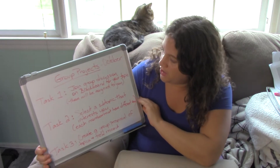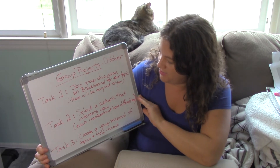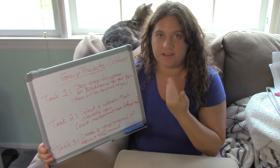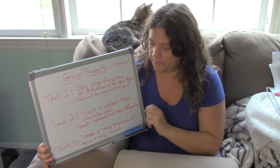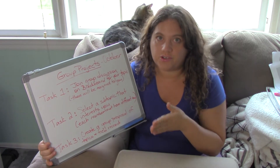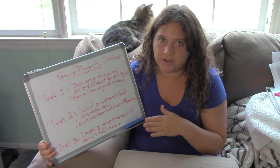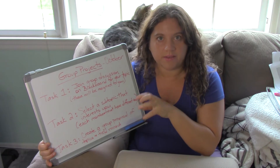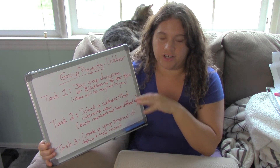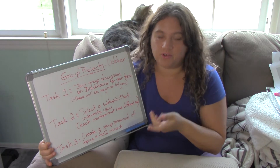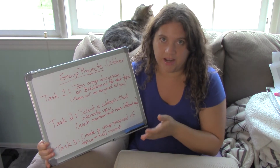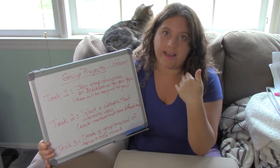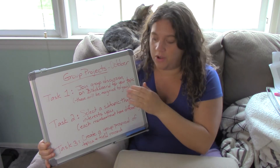Task one: join the group discussion on Blackboard for your topic. These will be assigned to you. I have assigned each of you to a group according to your preferences, and if you did not submit preferences, I automatically assigned you to a group. I tried to give you your first, second, or third choice, so I don't think anyone got any of their last choices. Those will be the people you'll be working with on this project until December. You can exchange information — phone numbers, emails, whatever you want to do to communicate. There will be ongoing discussions on Blackboard that I will be able to view, give feedback, and join in with you, so I will be checking into those.